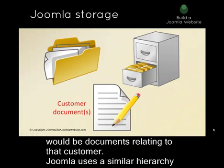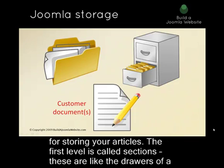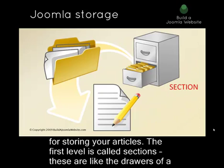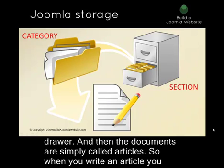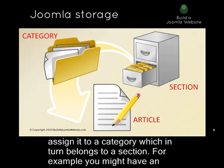Joomla uses a similar hierarchy for storing your articles. The first level is called Sections — these are like the drawers of a filing cabinet. The second level is called Categories — these are like the folders inside a drawer. And then the documents are simply called Articles. So when you write an article, you assign it to a category, which in turn belongs to a section.